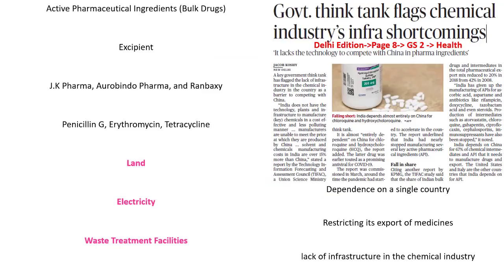Now let's look into the next article, which speaks about a common think tank flagging chemical industry's infrastructure shortcomings. This article is speaking about active pharmaceutical ingredients — how India was well in advance in the 1990s, how China overtook us, and today 70% of our active components are being imported from China. First, we have to understand what an active pharmaceutical ingredient is. Any medicine will have two important components: one is the active pharmaceutical ingredient, also called the bulkdrug, and the other is the excipient.